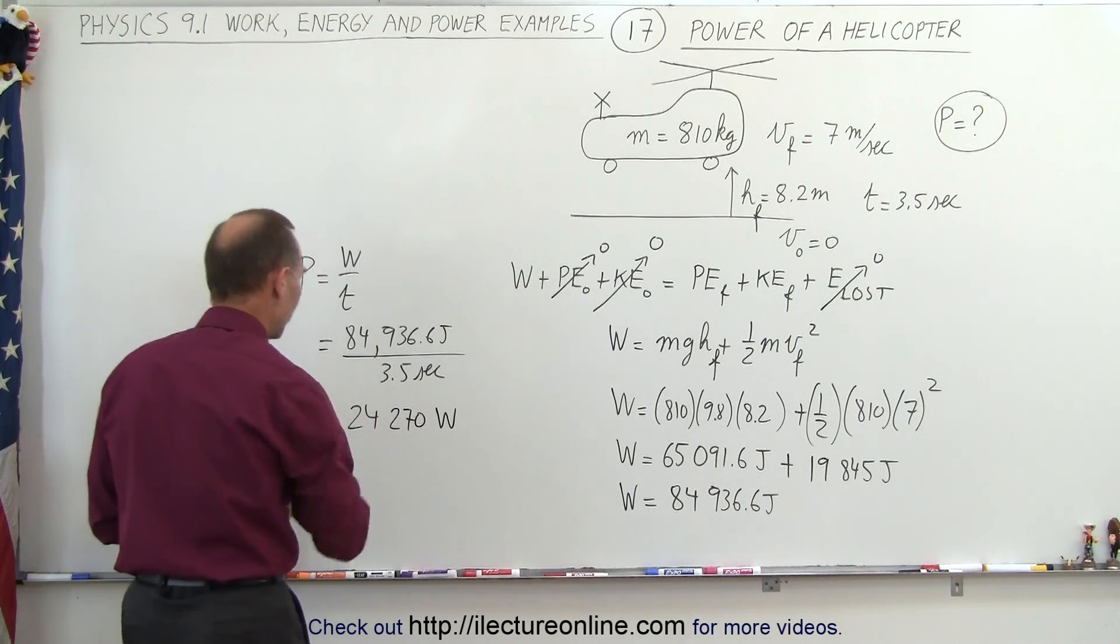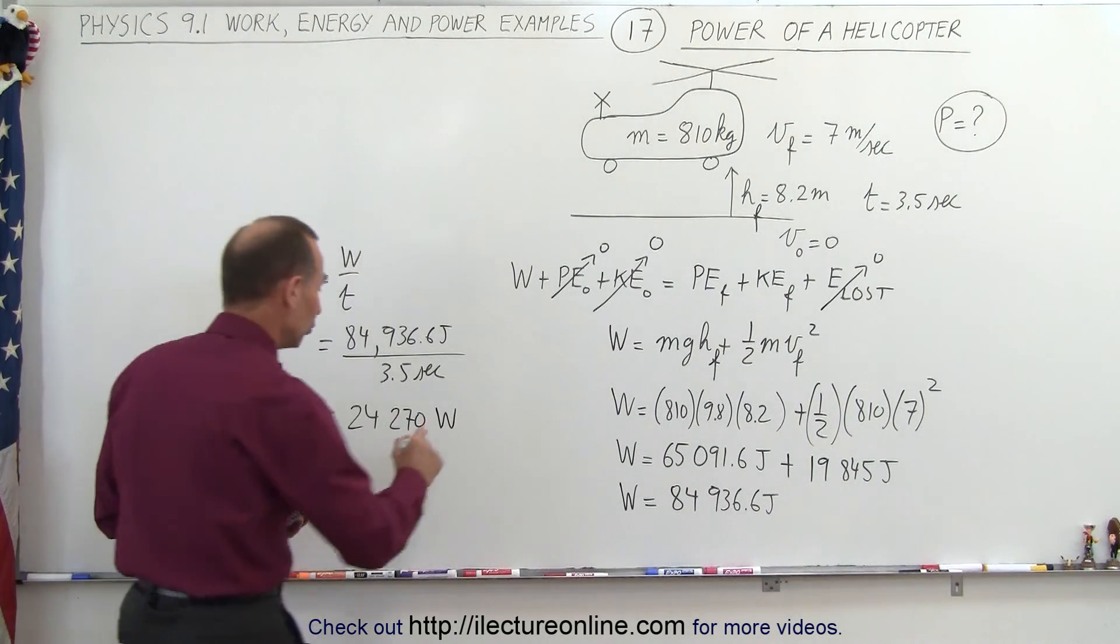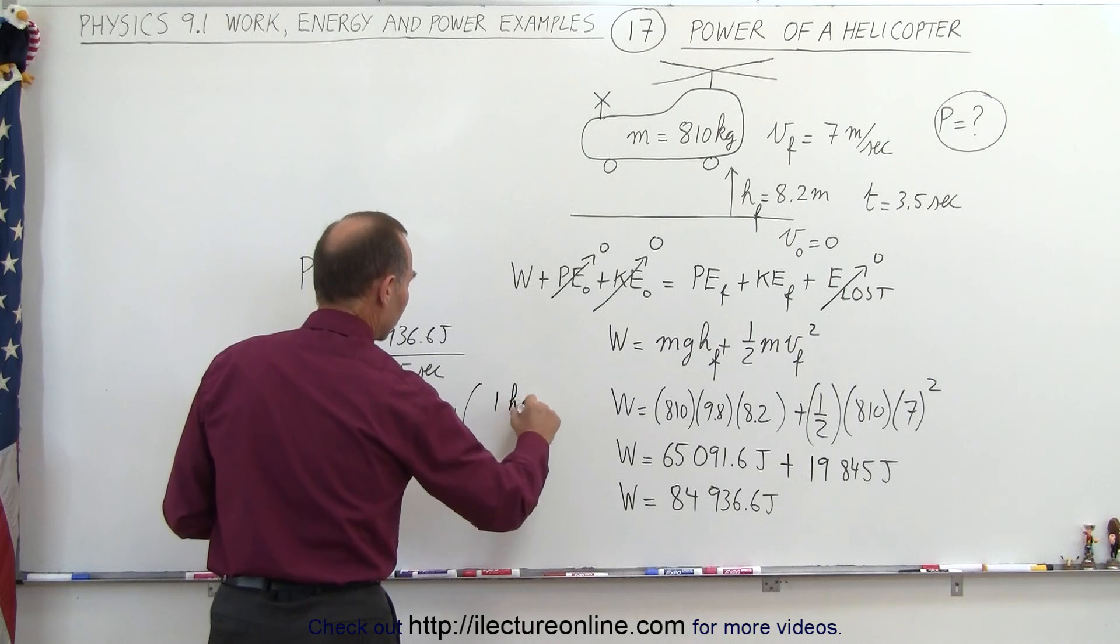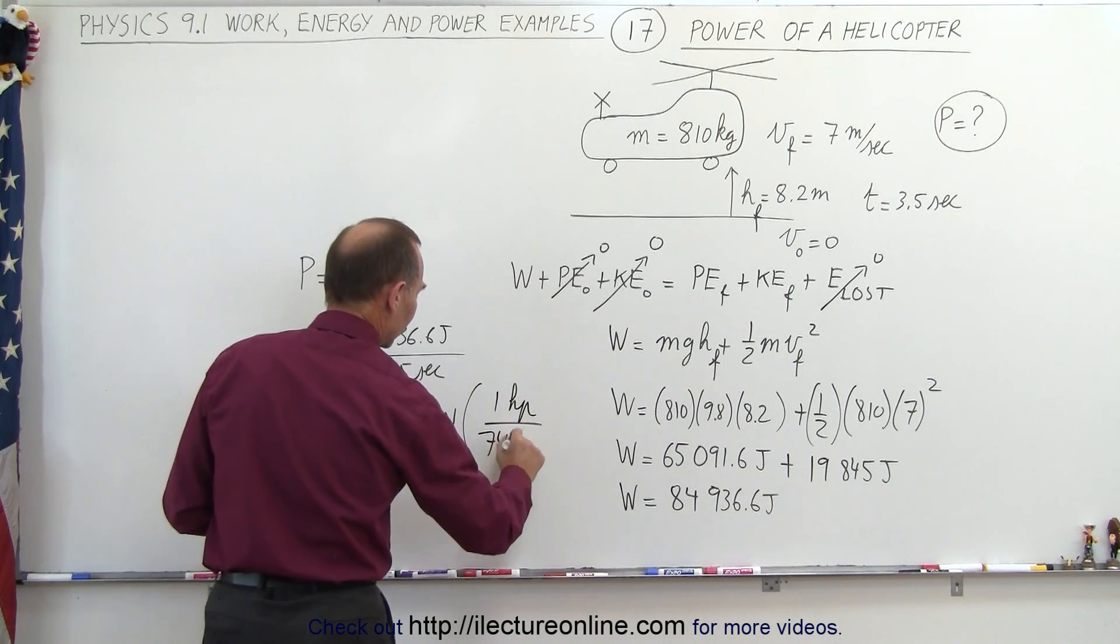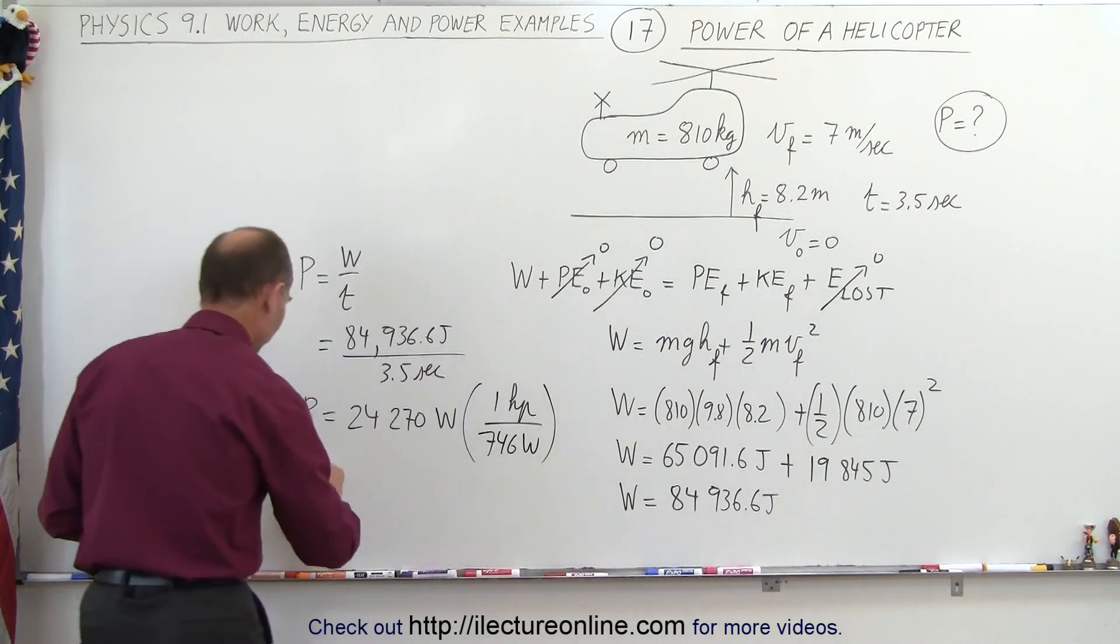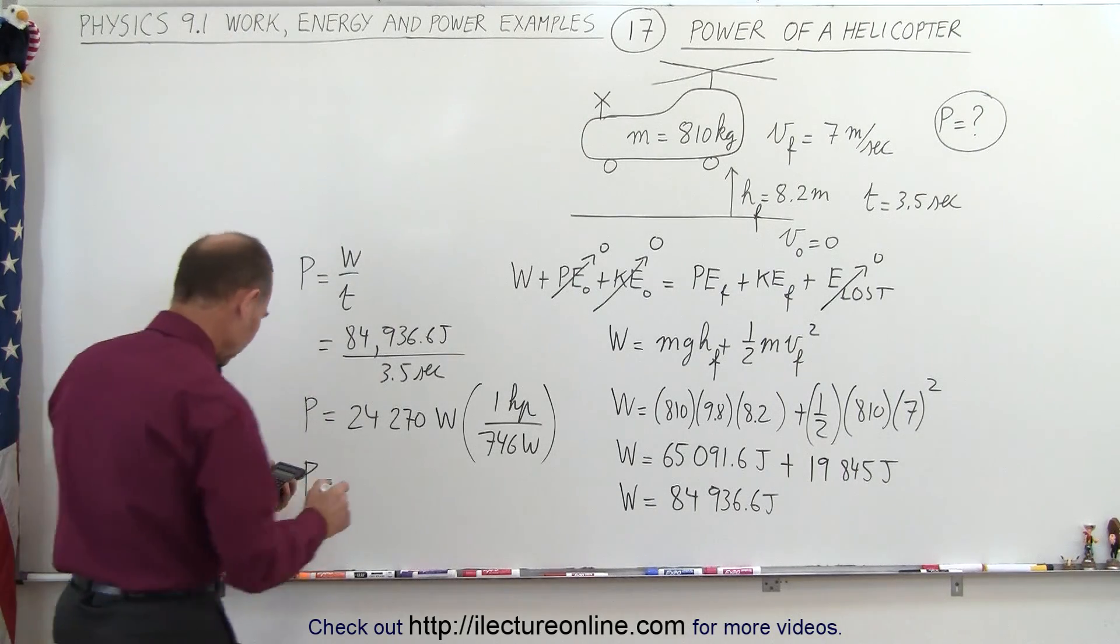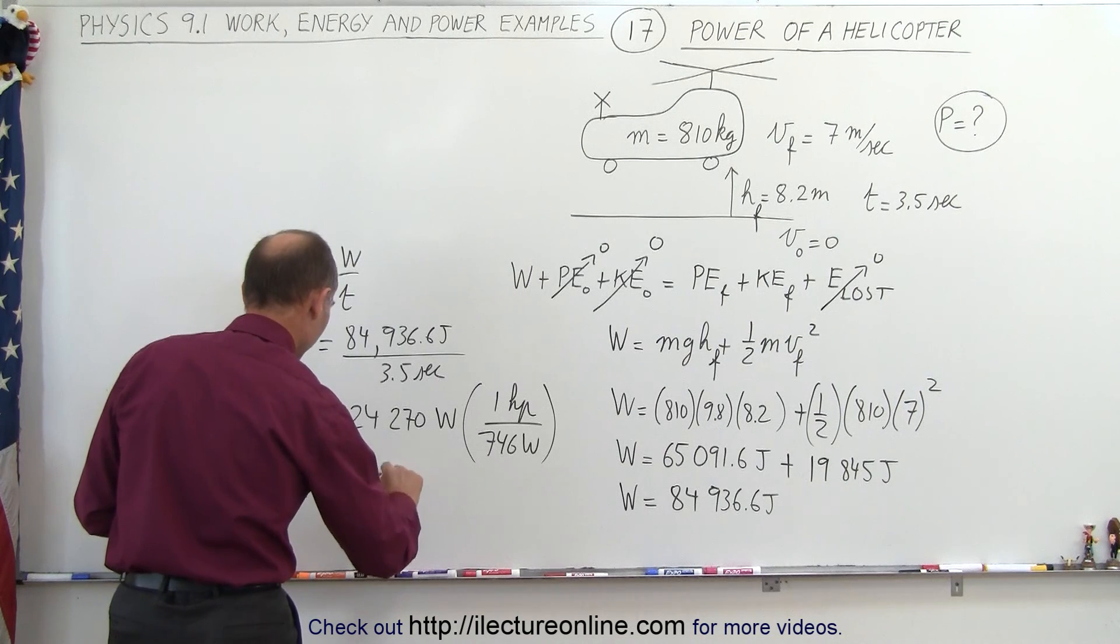So that's the power required. Now we want to convert that to horsepower. So we have 1 horsepower is equal to 746 watts. So then we're going to divide this by 746, and that gives us 32.5 horsepower.